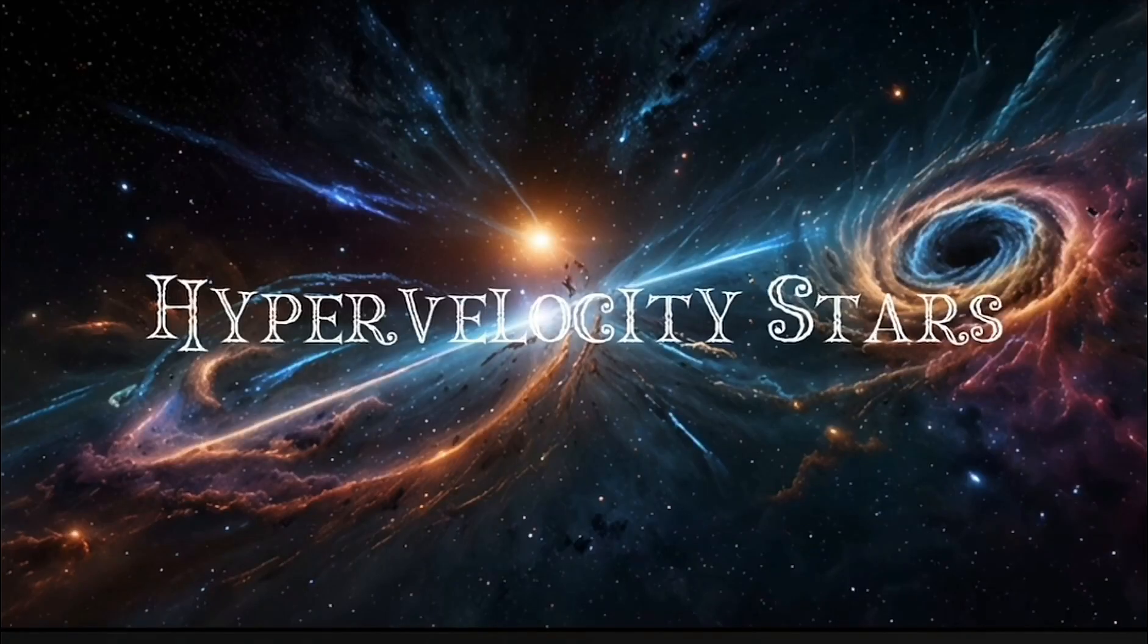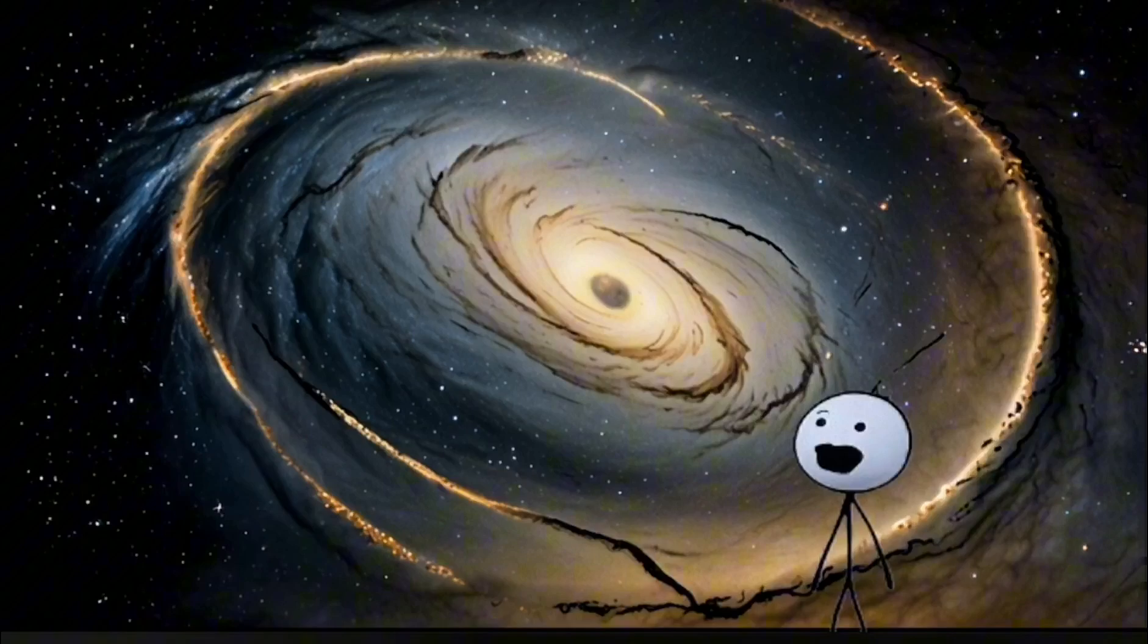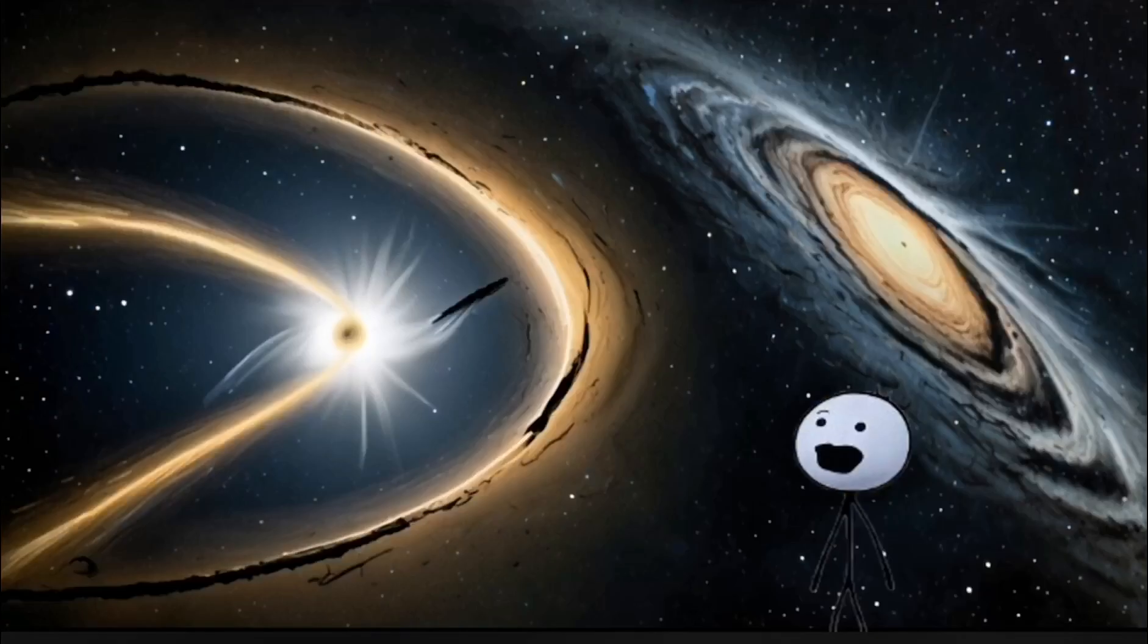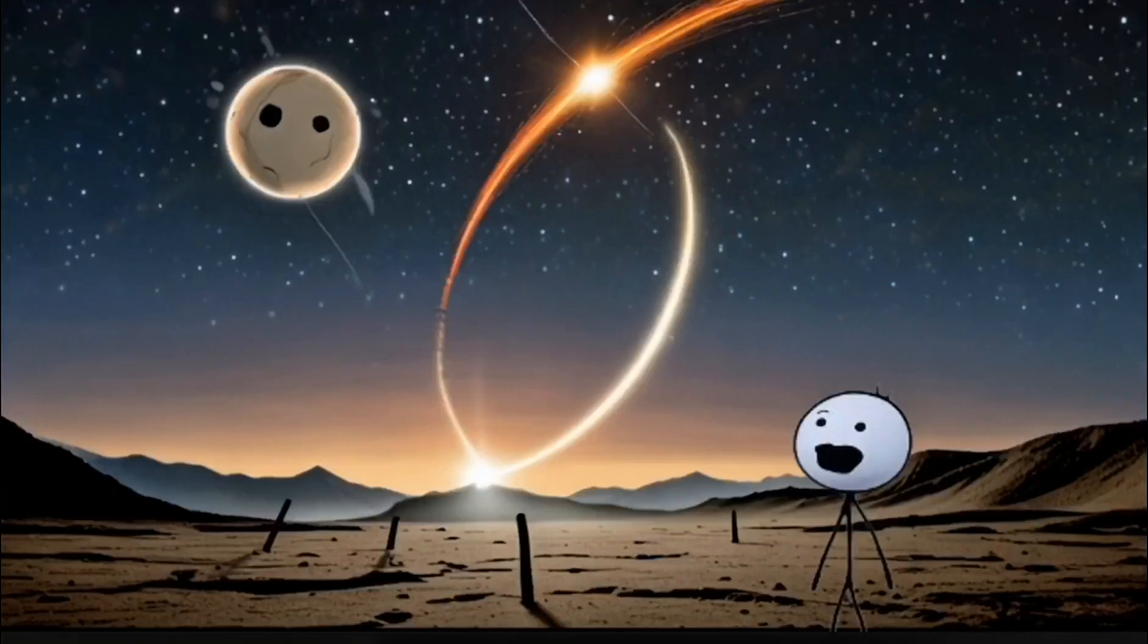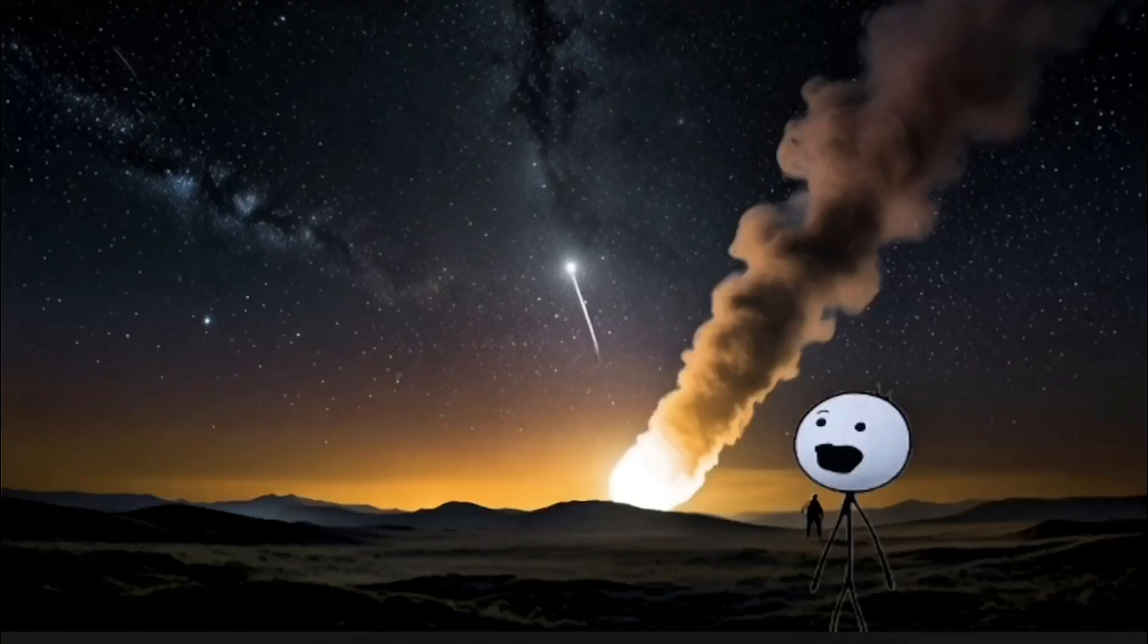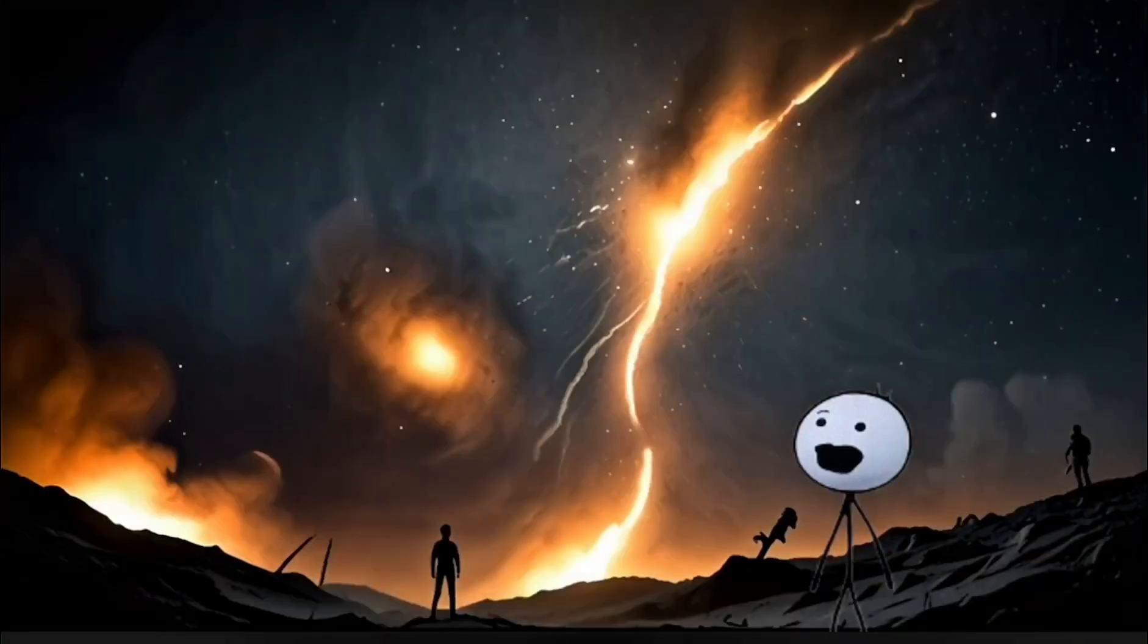Number 6: Hypervelocity stars. Most stars sit calmly in galaxies, following peaceful orbits. But some stars? They run. Hypervelocity stars are ejected from galaxies at millions of miles per hour, flung by black holes or galactic collisions. Imagine an entire star moving so fast that it escapes its own galaxy. That's like throwing a baseball so hard it leaves the planet. Now imagine what would happen if one of those got a little too close to Earth. Spoiler alert, it's not good.